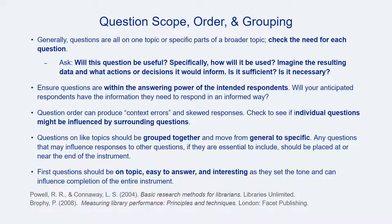Another check to consider is whether the anticipated respondents can answer the questions in an informed way — will these particular respondents know the answers, or would some other group be better prepared? Overall, questions at the start of a survey should be on topic, easy to respond to, and interesting to respondents. Survey questions should be grouped together based on topic or subtopic, and move from general to specific. It's important to think about question order, as some questions might skew responses by creating an emotional reaction or leading respondents in some way. Check each question to see if it might be influenced by surrounding questions, and consider rearranging questions to avoid this kind of context error.